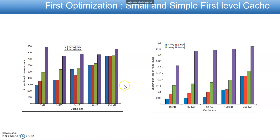From the graph, it is clearly seen that access time is less for smaller caches across different associativity levels — 1-way, 2-way, 4-way, and 8-way. Similarly, energy consumption is also less with smaller cache size and simple first-level caches. Based on these results, a small cache reduces indexing time and a simple first-level cache reduces access and data transfer time, thereby reducing the hit time.